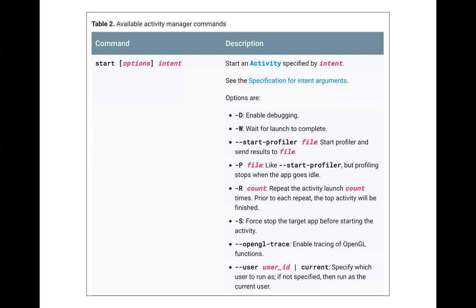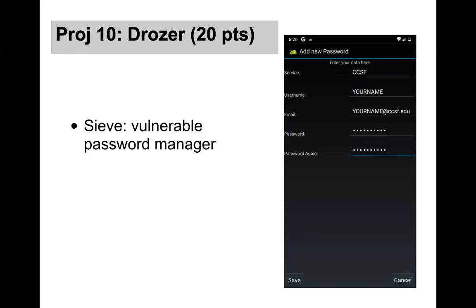AM — the Android Activity Manager — lets you send intents from the command line. All Drozer is doing is making these commands for you. You can look them up in Google documentation to find exactly how these command-line commands work and just launch any signal directly. Once you have a root command shell on your device, you can do everything right from there. Drozer is just a convenience.